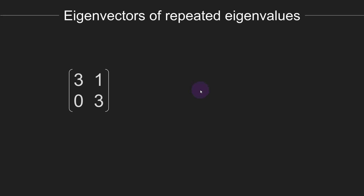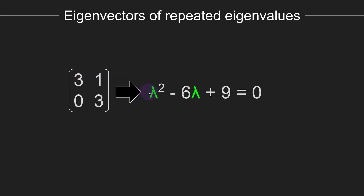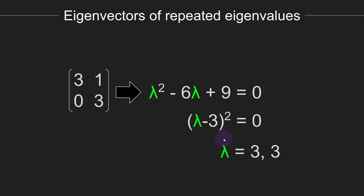First of all, there is nothing wrong or even suspicious about a matrix that has two or more of the same eigenvalue. Consider this matrix for example — it is a full rank matrix, nothing weird or unusual about it. The eigenvalues are computed by solving the characteristic polynomial, which for this 2×2 matrix gives lambda squared minus 6 lambda plus 9 equals 0. This factors nicely into (lambda minus 3) squared equals 0, so both eigenvalues of this matrix are equal to 3.